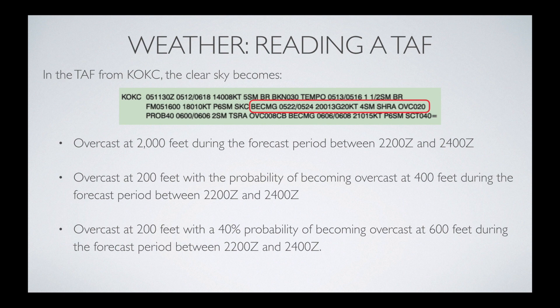The last answer says there's an overcast layer at 200 feet. But if we go to the end of this section dealing with the right time period, it says OVC020. We know you drop off the last two zeros, so that's an overcast layer at 2,000 feet — not 200 feet. It's also wrong because the only place this TAF talks about a 40% probability is actually for the next time period — PROB 40 starting at the 6th at midnight. Those are two reasons the third answer is incorrect. The second answer also says overcast at 200 feet, and it also incorrectly says it becomes overcast at 400 feet — so that one is also incorrect.